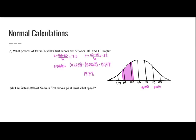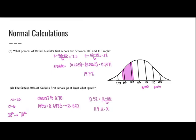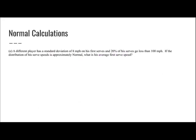The fastest 30% of Nadal's first serves go at least what speed? The mean is 115 and the standard deviation is 6. The fastest 30% means he is performing at the 70th percentile, so I look in the table for the value closest to 70%, which is 0.6985, giving a Z-score of 0.52. I plug in 0.52 and solve for X.